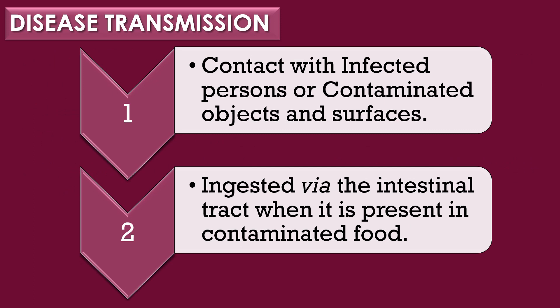Disease transmission of Proteus mirabilis: Proteus mirabilis spreads mainly through contact with infected persons or contaminated objects and surfaces. Proteus mirabilis can also be ingested via the intestinal tract when it is present in contaminated food.